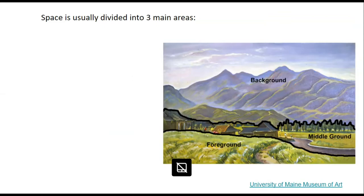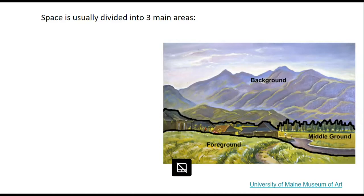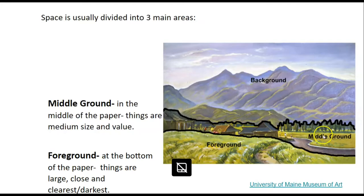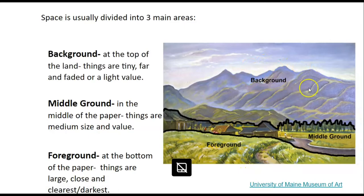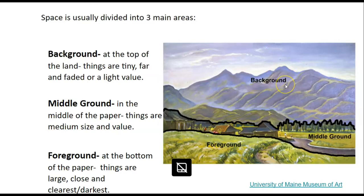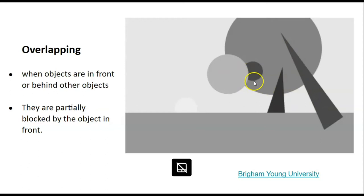Space is divided into three areas. We have our foreground, which is at the bottom — things there are large, close, and very clear and dark. Then we have our middle ground, which is the middle of the paper — things are medium in size and medium in value. And then we have the background — things are so small we can barely see them, very faded and a light value. We can also show space by overlapping, so some objects are in front of others and partially blocking the object behind.